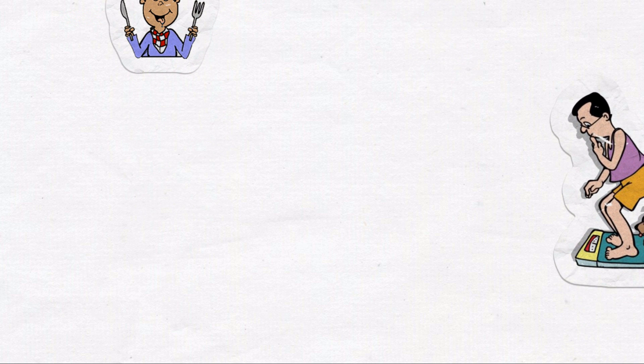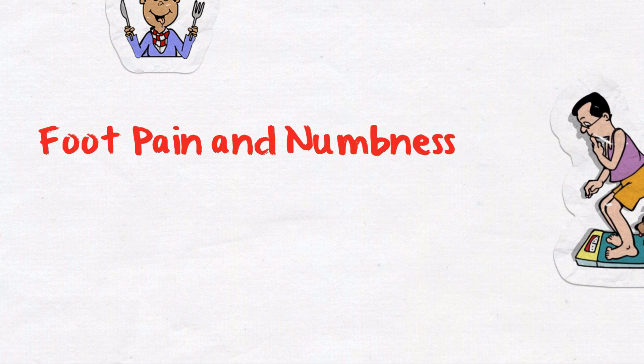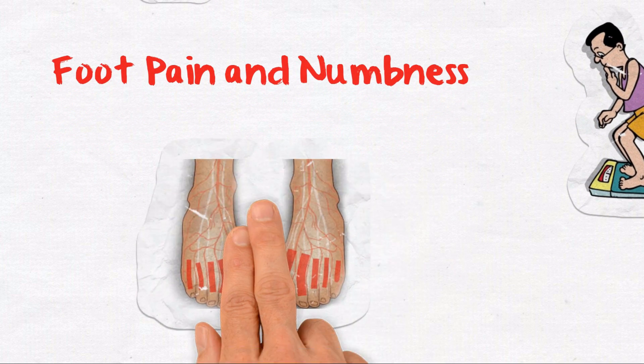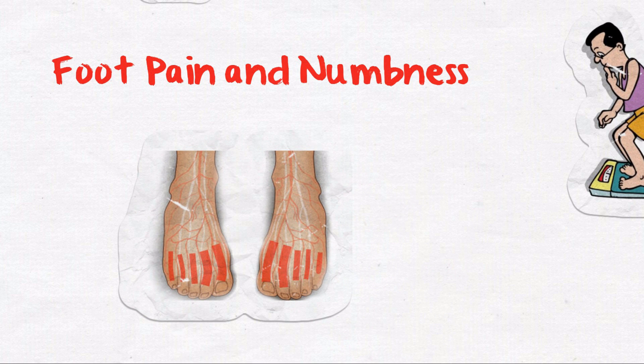Foot pain and numbness: Over time, diabetes can cause damage to nerves throughout the body. Some people may not have any symptoms of the damage, while others may notice numbness, tingling, or pain in the extremities.